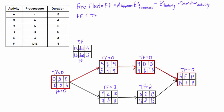For activity B, whose only successor is D: early start of D minus early start of B minus duration of B gives 9 minus 5 minus 4, which is zero. For activity D, the minimum early start of its only successor is 15, so 15 minus 9 minus 6 gives zero. Activity F has no successors, but since its total float is zero, its free float must also be zero.